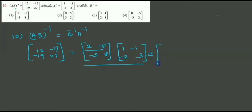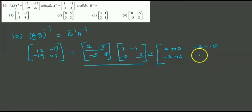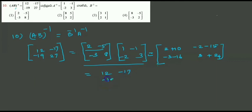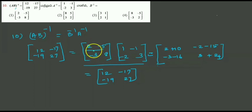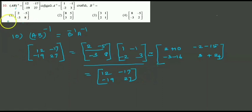We need two values. First row, first column: 2 plus 10. First row, second column: minus 2 minus 15. Second row, first column: minus 3 minus 16. Second row, second column: plus 3 plus 24. So 12, minus 17, minus 19, 27. Substituting for B inverse, the first option is the correct answer.